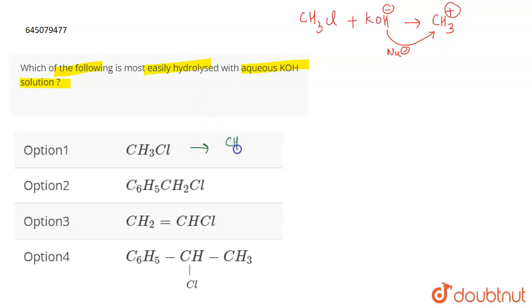So the carbocation formed here will be CH3 positive. The carbocation formed here will be C6H5CH2 positive. Here it will be CH2 double bond CH positive. And here the carbocation will be C6H5CHCH3 plus. This will be the carbocation here. Now you have to look at the stability of the carbocation.